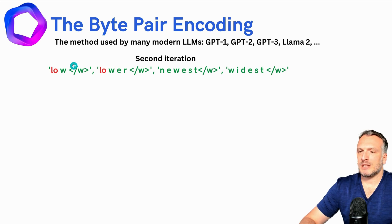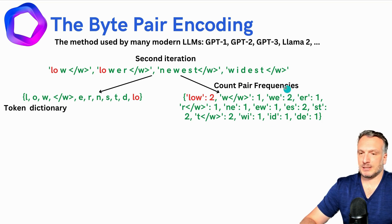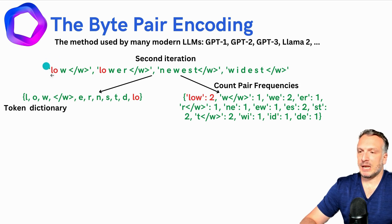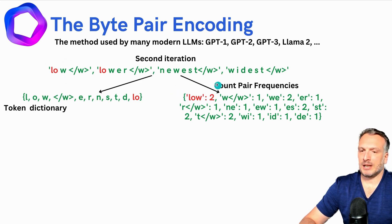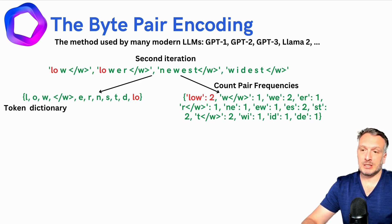Let's look at the second iteration. We start from the text where we already tokenized the L, O pair, and do the same thing. We have the token dictionary from earlier, and now we count the pair frequencies. You will notice that L, O, W is counted as a pair of tokens — not characters. Now that L, O is a token, I look at tokens that follow each other. L, O and W follow each other as a pair of tokens, and I have two of that pair. I compute the frequency of the other pairs of tokens as well — so we move from characters to tokens.